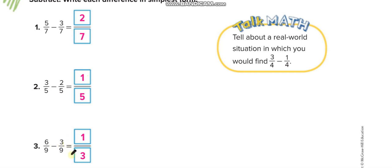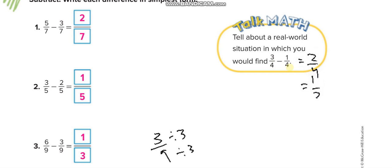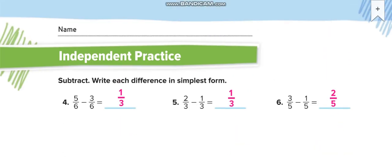6 minus 3 is 3 over 9 — simplify by dividing by 3 up and down to get 1 over 3. Here, 3 over 4 minus 1 over 4 equals 2 over 4, which equals one half. Whenever the numerator is half of the denominator, that fraction is always equal to one half.